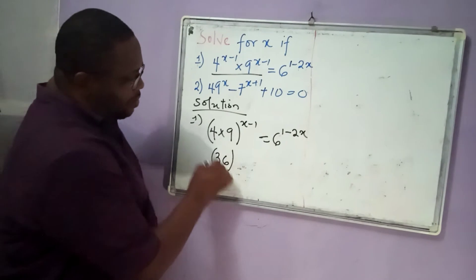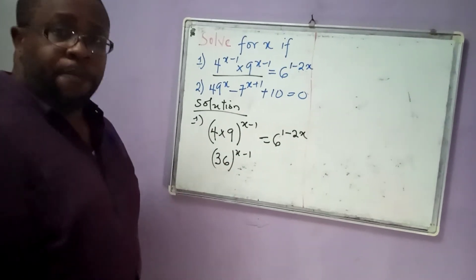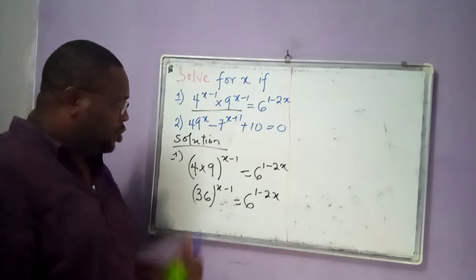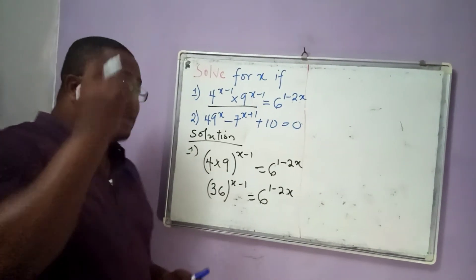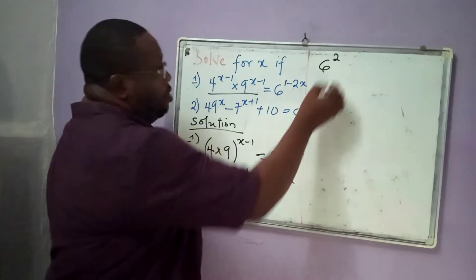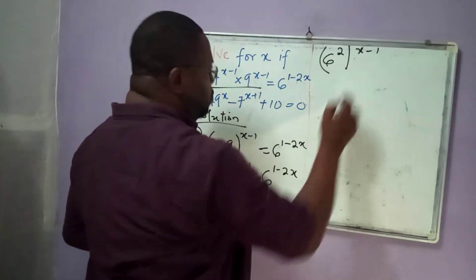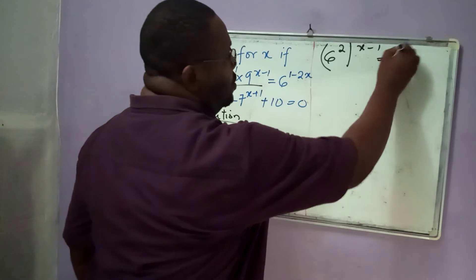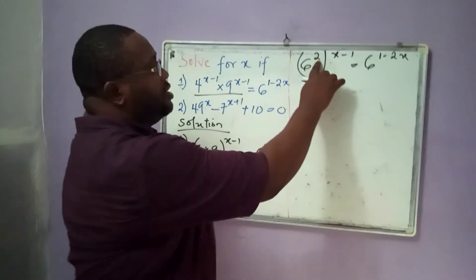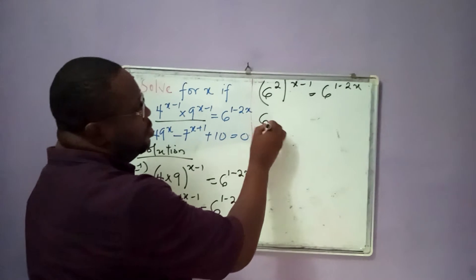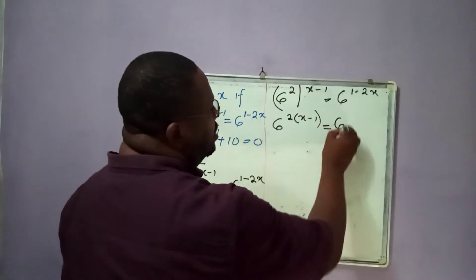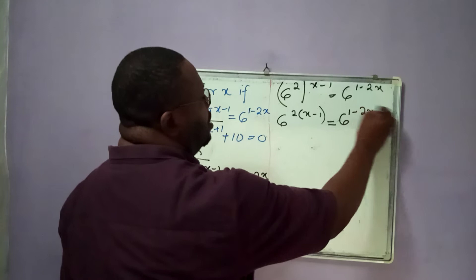So I have 36 raised to the power x minus 1. And then the right-hand side remains the same: 6 to the power 1 minus 2x. Now 36 is the same thing as 6 squared. So on the left-hand side, I simply have 6 squared, all raised to the power x minus 1, and this is equal to 6 to the power 1 minus 2x. So we now have 6 to the power 2 into x minus 1 is equal to 6 to the power 1 minus 2x.